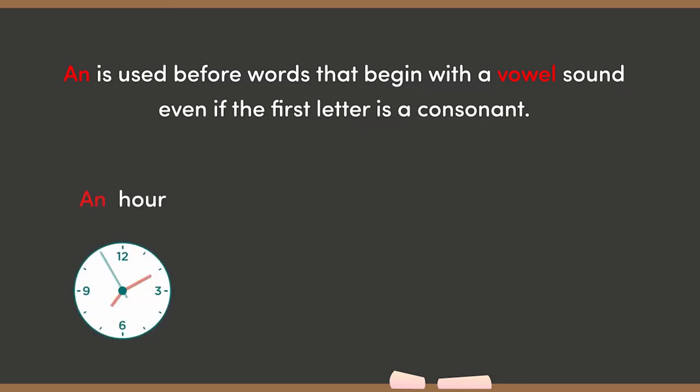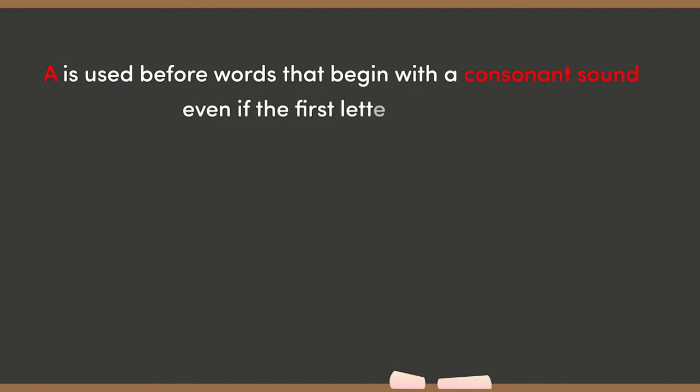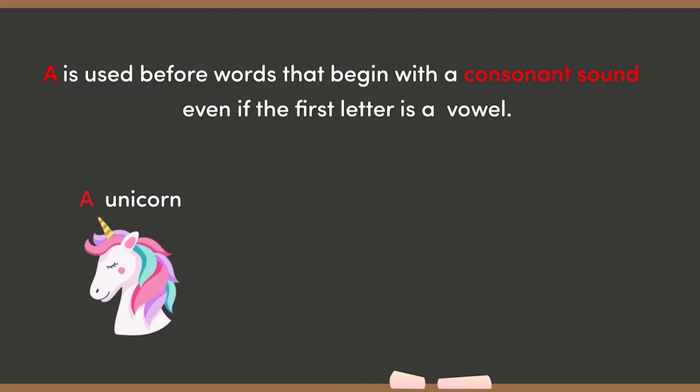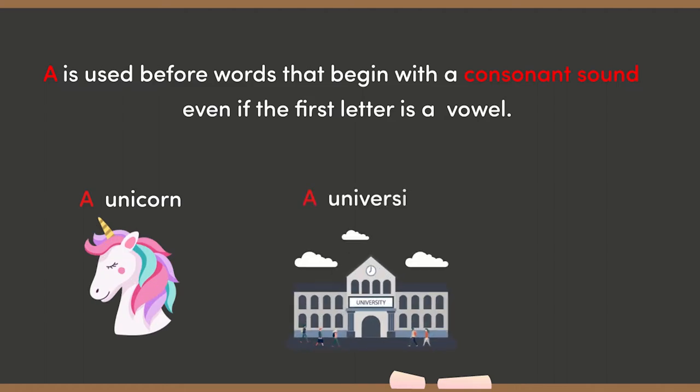A is used before words that begin with a consonant sound even if the first letter is a vowel. For example, a unicorn, a university, a one.